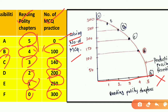Our economy has limited resources. So what do we do? We need to achieve maximum output and production. We need to choose the right combination — we need to find the maximum possible combination of the two products.